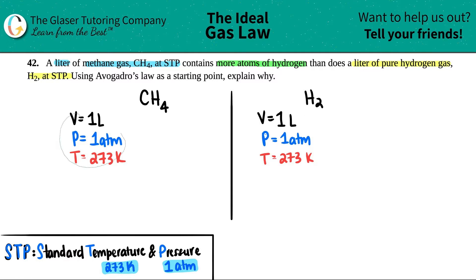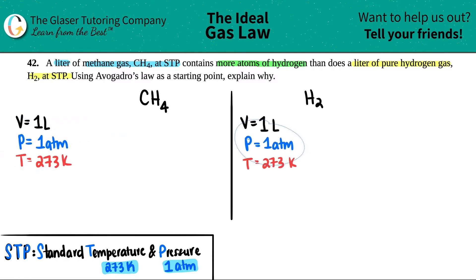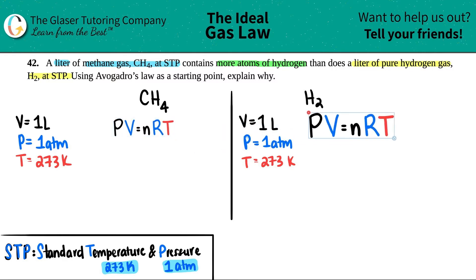And now if I just pull this back. What can we find here? Well, we have only one volume, one pressure, one temperature. Remember, that's the ideal gas law. That's PV equals NRT. So for both of these, technically, you would use PV equals NRT to solve for what?